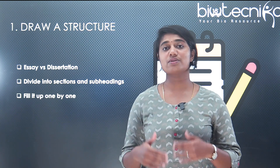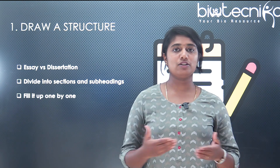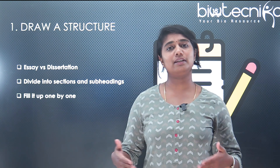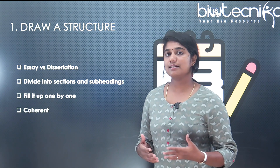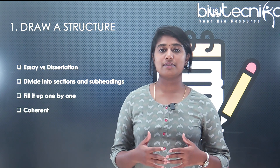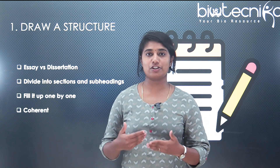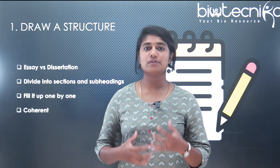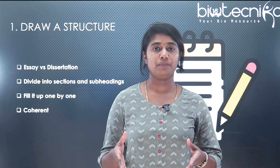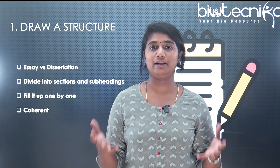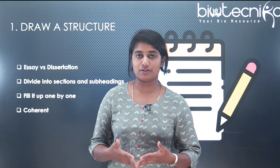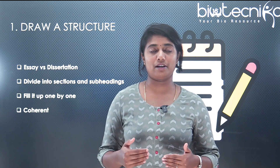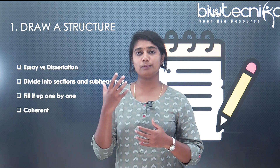Once you are ready with your sections, you start filling them up one by one. It's not necessary to go in a strict flow, especially when you're writing — you can take up the first thing you're comfortable with and then build on that. Next is coherence: the flow of your dissertation. Everything you write has to be connected. One of the best ways to do this is when you're ending a paragraph, make sure you end it by introducing the next paragraph. That is how you draw a flow and connectivity between your content.